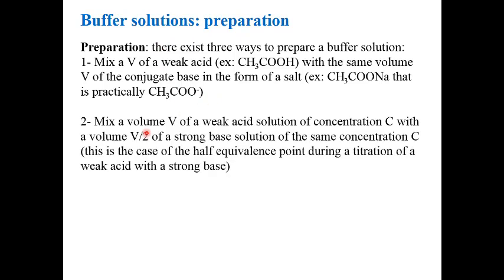The second method is what we have seen at the half equivalence point: mix a volume V of a weak acid of concentration C with a volume V/2 of a strong base solution of the same concentration C. This corresponds to the half-equivalence point during titration of a weak acid with a strong base. In the beaker we will have half the moles of the original acid remaining, and half as its conjugate base.